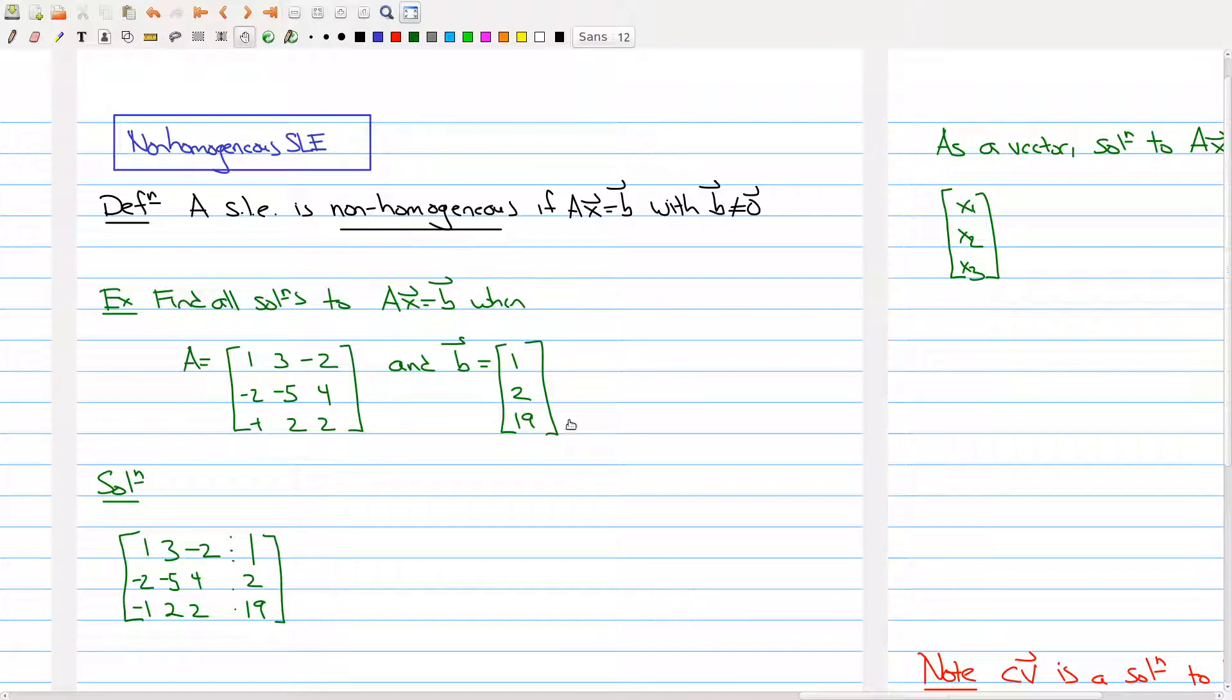This is my vector B that I want it equal to: 1, 2, and 19. You'll notice that this matrix A is actually the same matrix A that we had in the previous example.